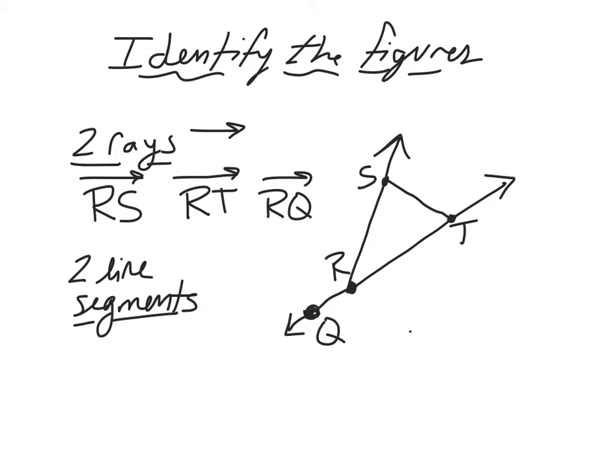Identifying figures continues. Looking at the diagram below, you could identify rays. There's lots of rays. Remember we use this symbol over the two capital letters to represent a ray. We'd have ray RS going in this direction forever from point R through S. Ray RT going from point R through point T in that direction forever. Ray RQ would be another ray.